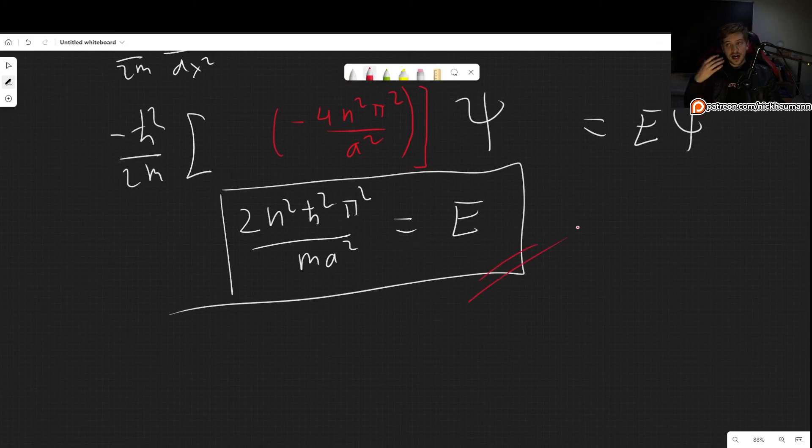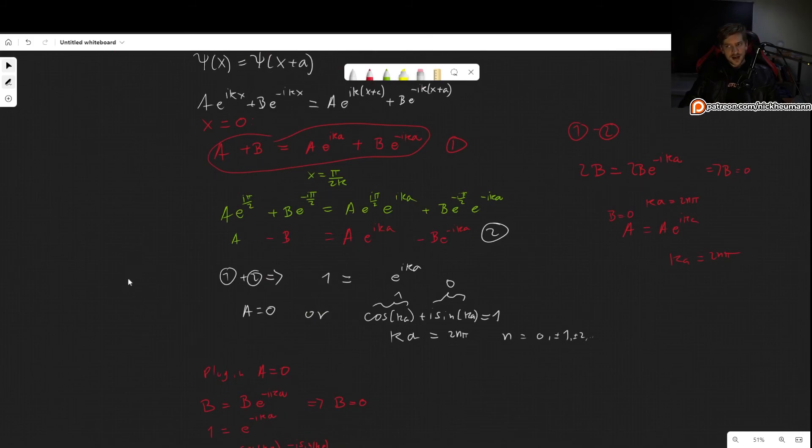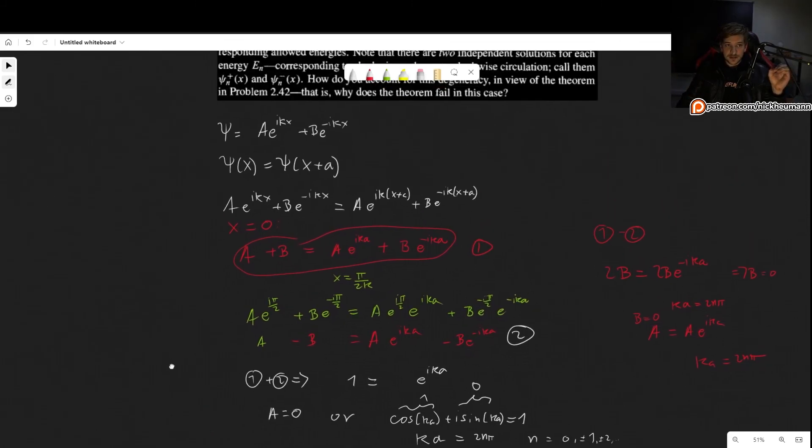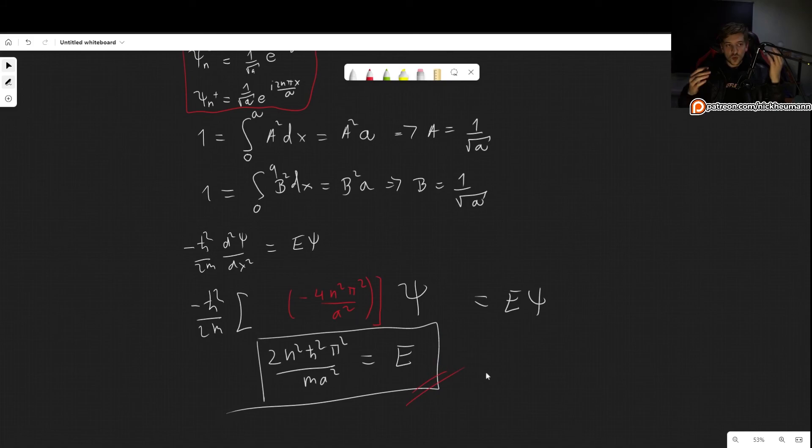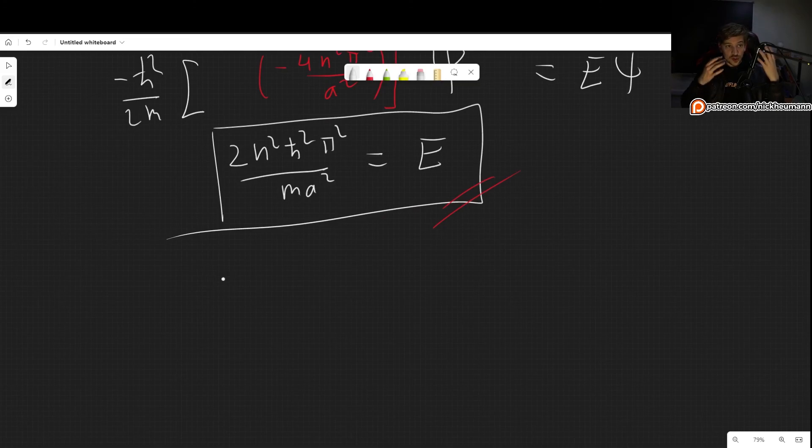So we can see that these are our two wave functions, and this right here is their energy. And we can see that our wave functions in one dimension have the same energy. And just in the previous problem, we showed that that is not a thing that can happen. We said bound states in one dimension cannot be degenerate. So what's going on here?